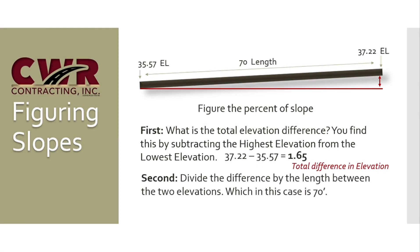In this next step, we take the total difference in the elevation and divide it by the total length, or the distance between the high point and the low point. In this example, there's 70 feet between 37.22 and 35.57. When we divide 1.65 by 70 feet, we get 0.023, or 2.36 percent of slope.